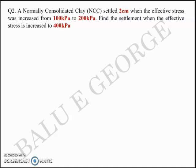Question number two. A normally consolidated clay settles 2 cm when the effective stress was increased from 100 to 200 kilopascal. Find the settlement when the effective stress is increased to 400 kilopascal. This question is quite similar to the previous one. You are given the two effective stresses 100 and 200; when the stress changed from 100 to 200, the clay settled 2 cm.